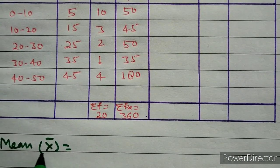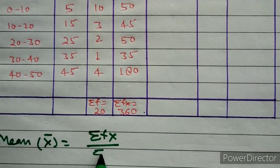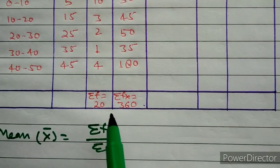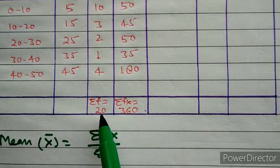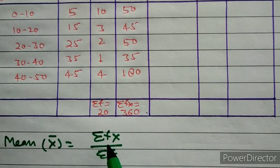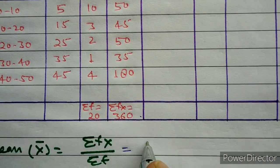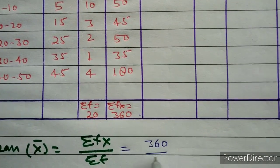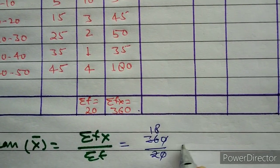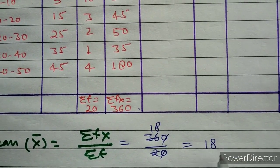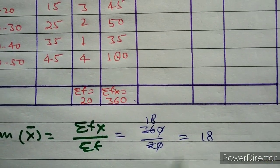Now we will calculate the mean. The mean x̄ equals sigma fx upon sigma f. Here sigma fx is 360 and sigma f is 20. Putting these into the formula: 360 divided by 20 gives us 18. Thus the mean x̄ equals 18.